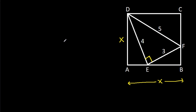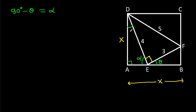Now, suppose this angle is theta, then this angle is 90 degrees. So this angle will be 90 degrees minus theta. Suppose it is alpha, then this angle will be 90 degrees, so this angle will be alpha.